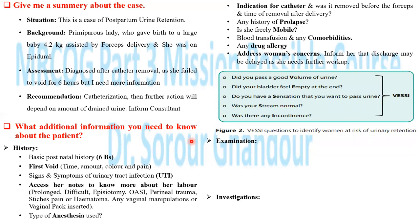An important new part added in the new TOGA article is to address the woman's concern and identify women at risk of urine retention. Urine retention is not only inability to void — there is also suspicion that the woman may go into retention. Use the abbreviation BUSY: V for Volume — did you pass a good volume of urine? E for Empty — do you feel your bladder is empty? S for Sensation — do you still feel the urge to void? S for Stream — was your stream normal or abnormal? I for Incontinence — was there any incontinence? This helps identify women at risk of developing urine retention.